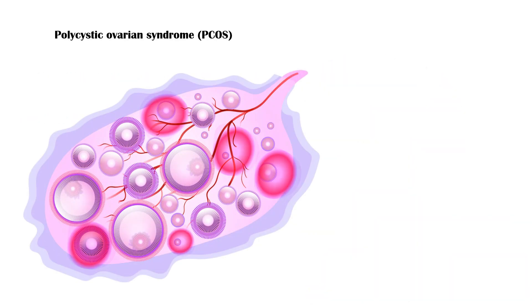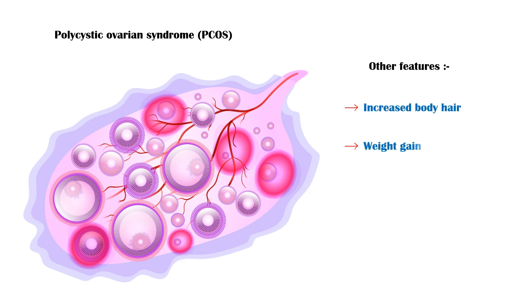Polycystic ovarian syndrome. Irregular periods are the most common sign of polycystic ovarian syndrome. Other symptoms and signs of polycystic ovarian syndrome include increased body hair, especially in the face, weight gain, and acne.